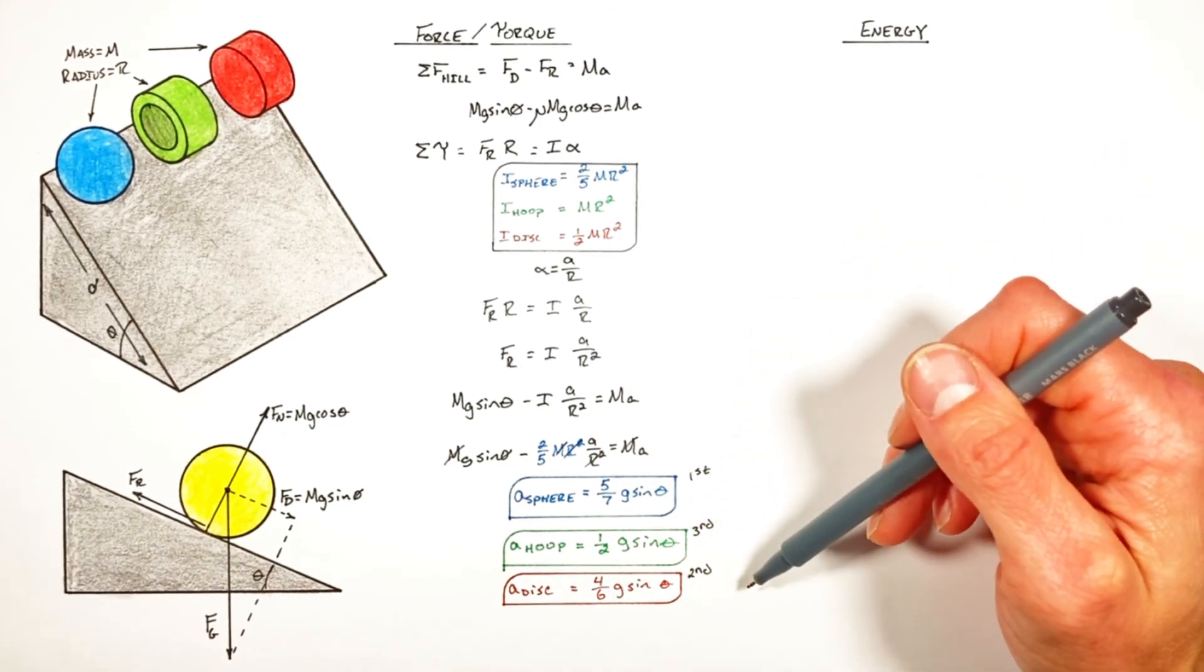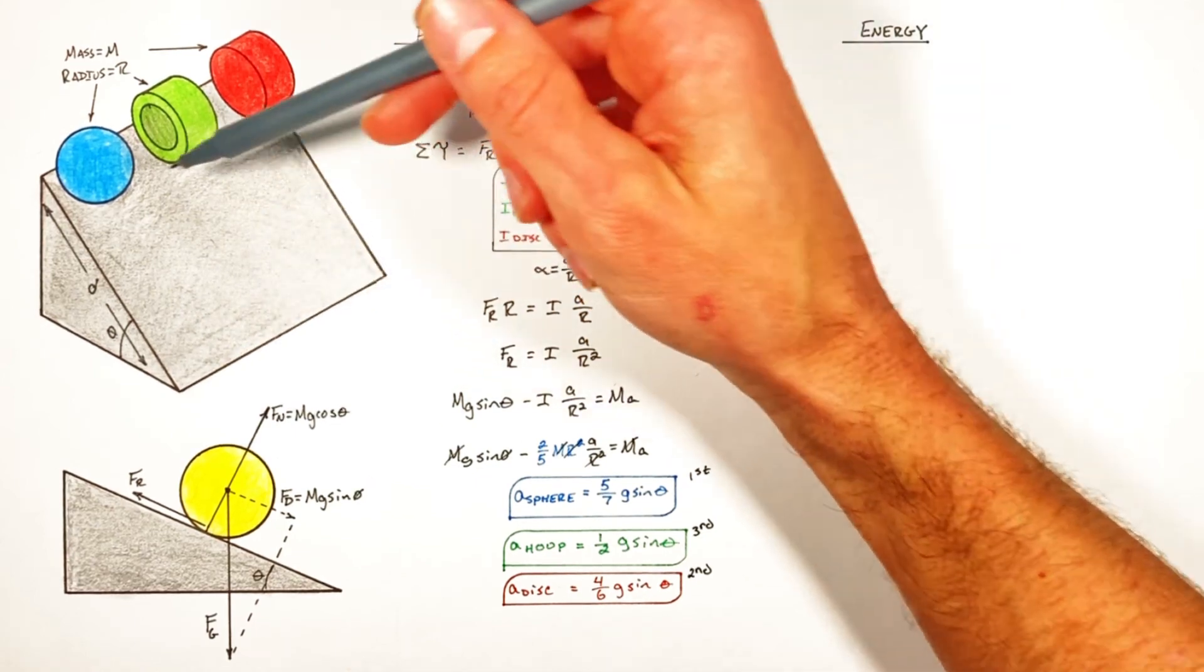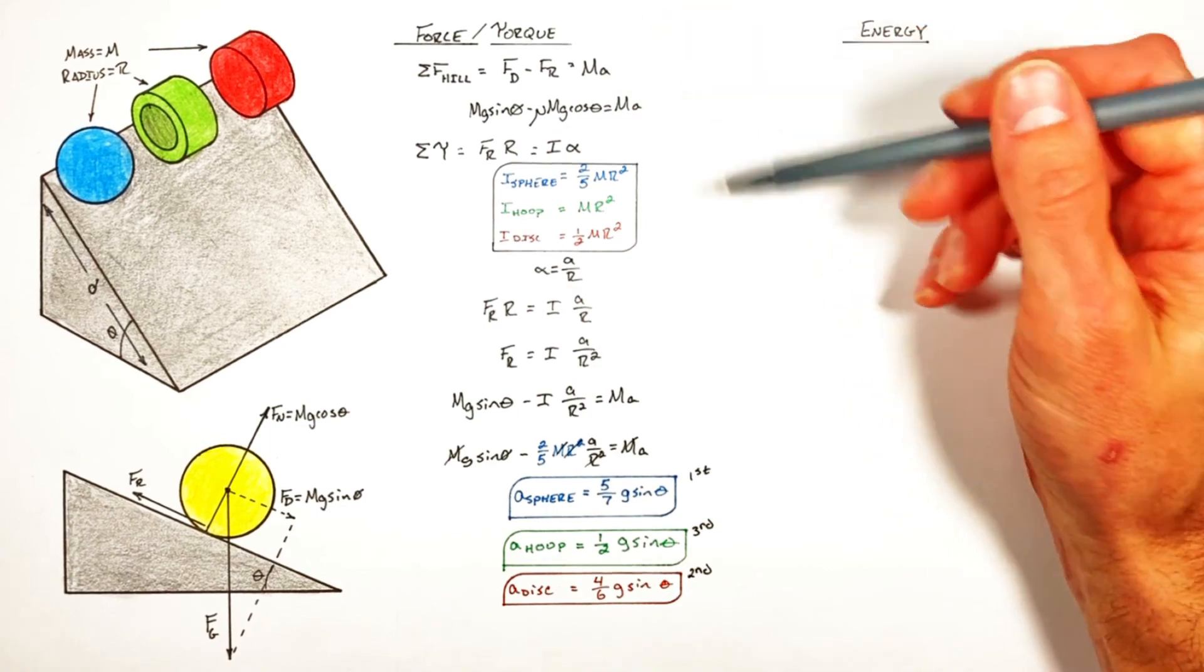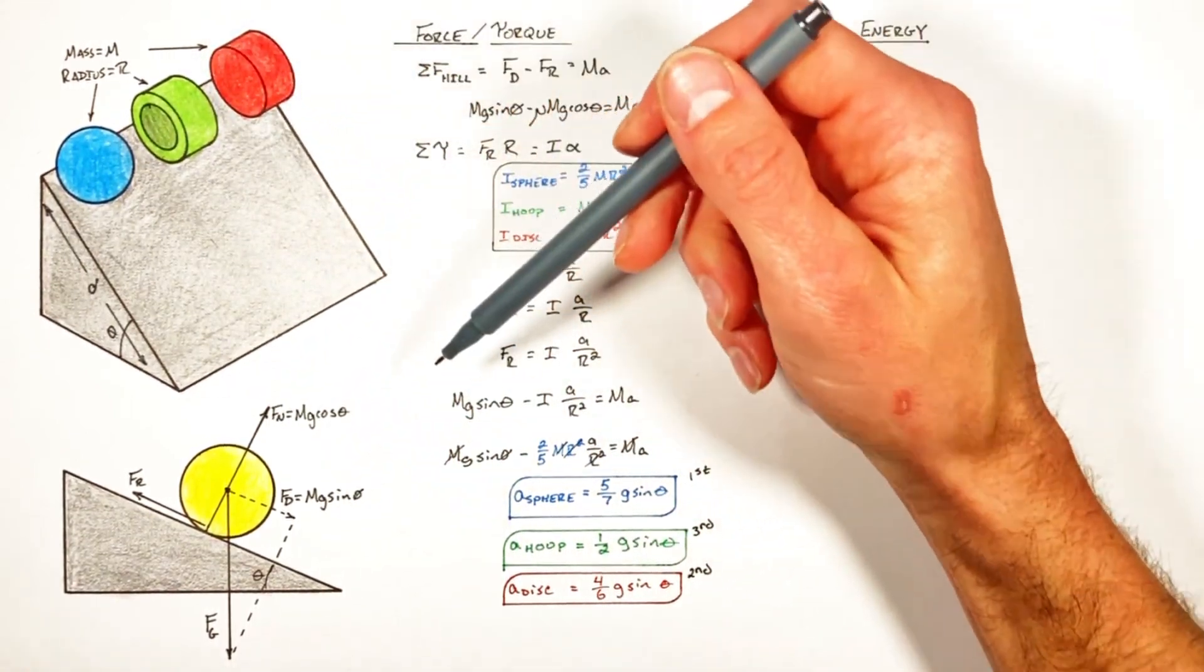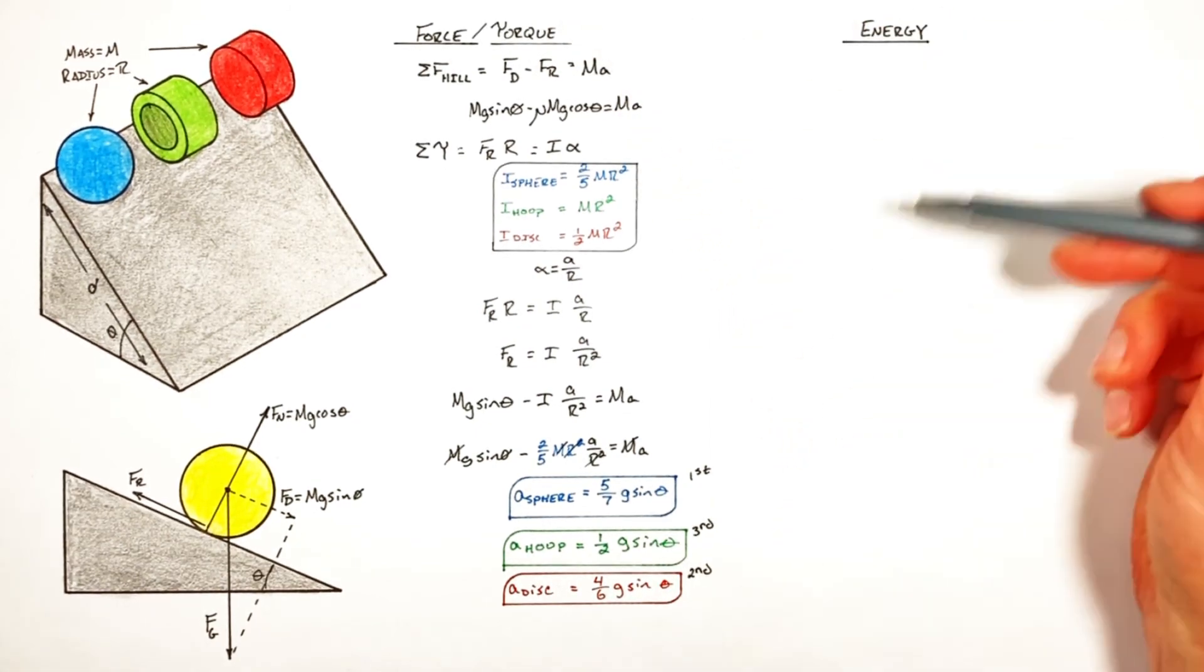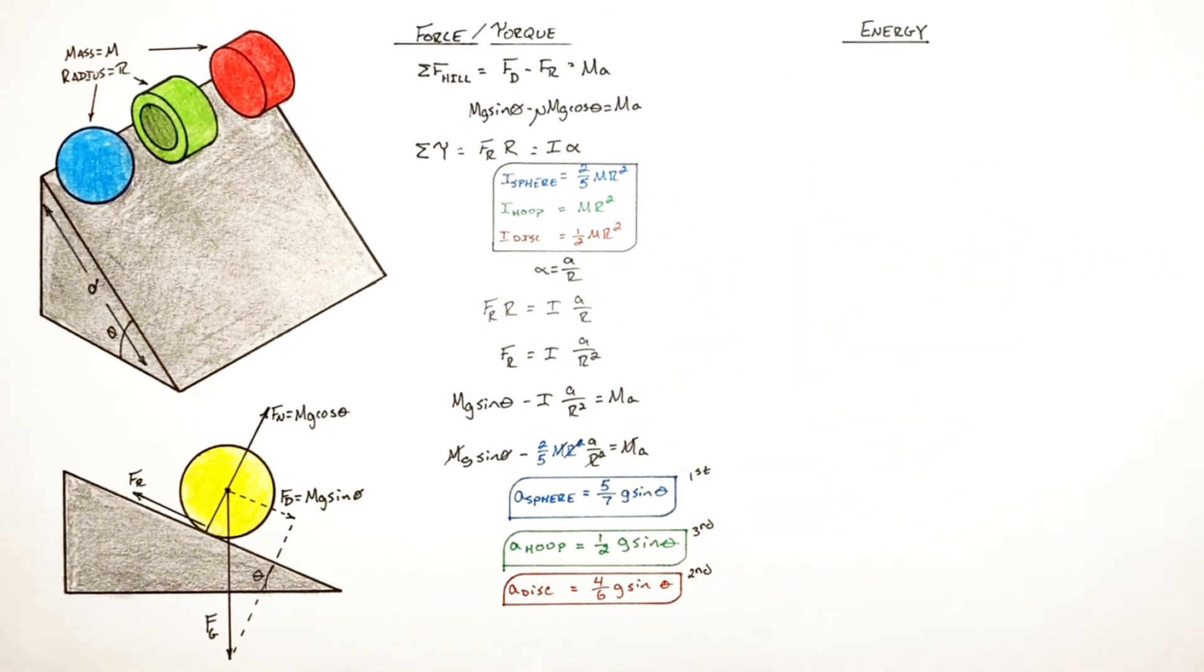Ultimately the object with the greatest acceleration, that's the sphere, is going to get to the bottom of the hill first, followed shortly by the disc and then a little while later the hoop. So this is how you solve the classic problem of a sphere, a hoop, and a disc accelerating down a hill using force and torque. Stick around and I'll show you how to do this using energy which I think wraps everything together nice and neatly. And on that note, that's all for now.